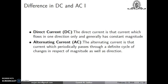Let us see the difference between AC and DC supply. DC, or direct current, is that which flows in one direction only and generally has a constant magnitude. Alternating current is that current which periodically passes through a definite cycle of change with respect to both magnitude and direction.